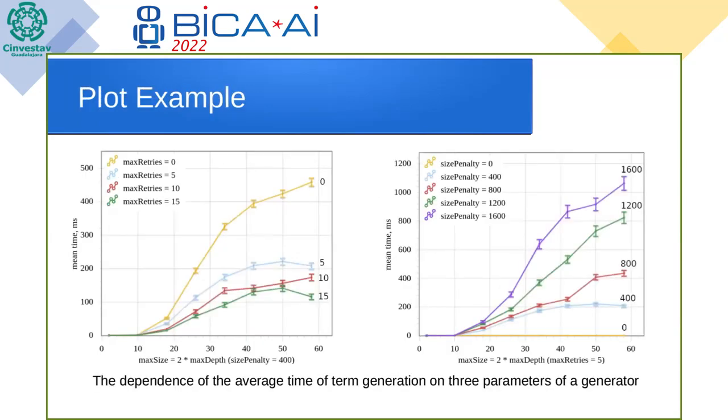The example is shown on that slide. There is dependency of mean time of generation per one object depending on the three parameters: max size, penalty, and restriction on number of retries on each level.